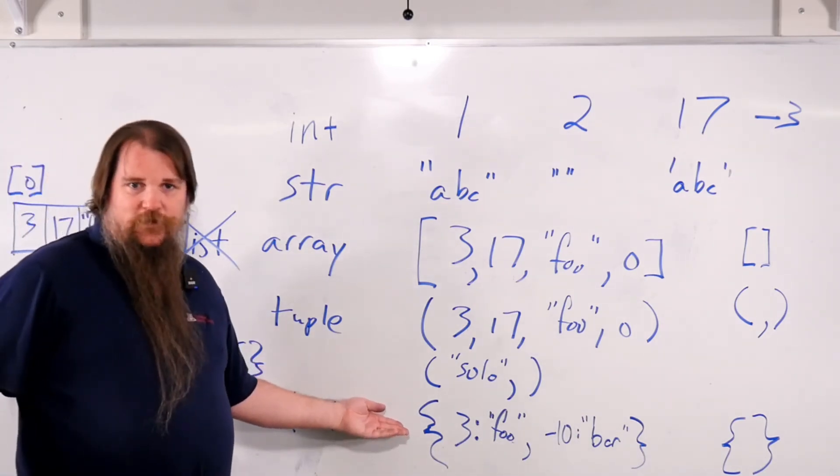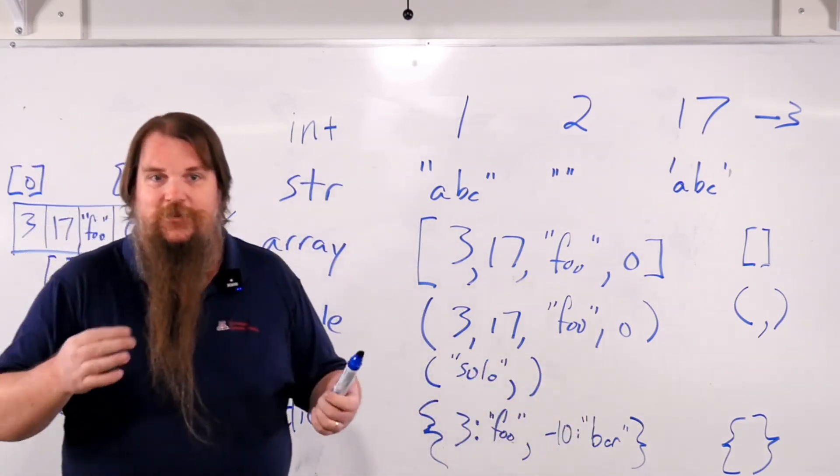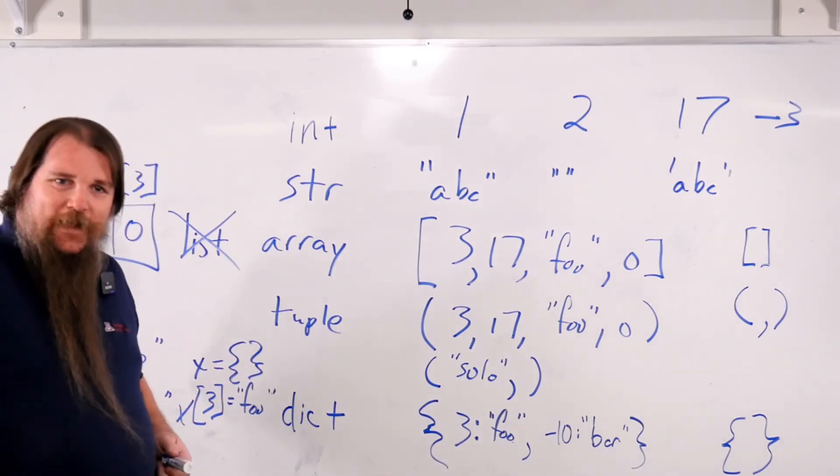So this is a dictionary that contains two values. So you could say x equals this code, and what you'd have is a dictionary that has two values. Let's actually show that live. Let's show the dictionary.